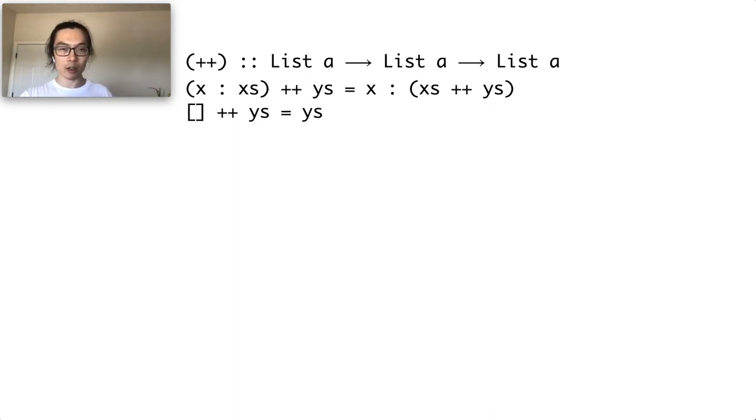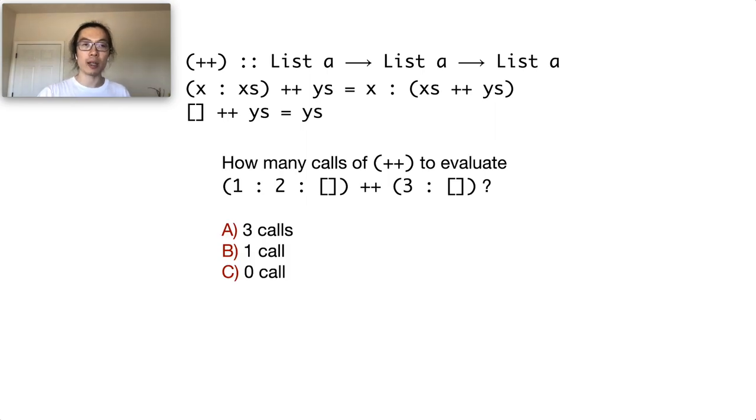Let me elaborate with the append function defined in Haskell. My question is, how many calls of append would happen to evaluate the expression? A, 3 calls. B, 1 call. And C, 0 call. A hint is that this is a trick question.